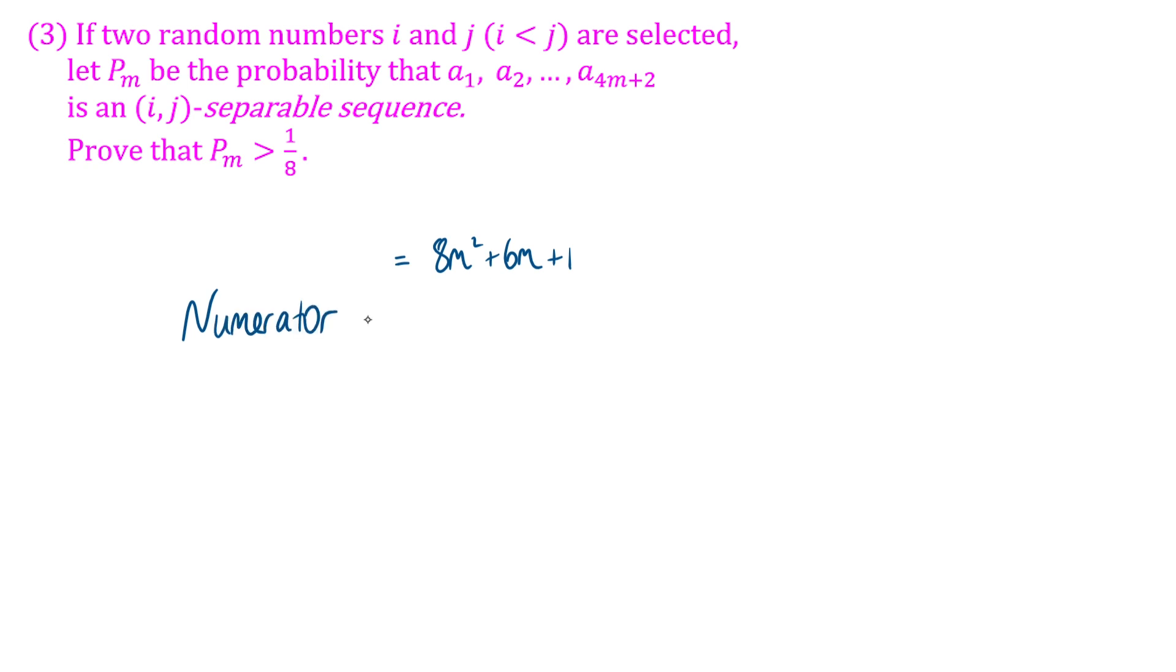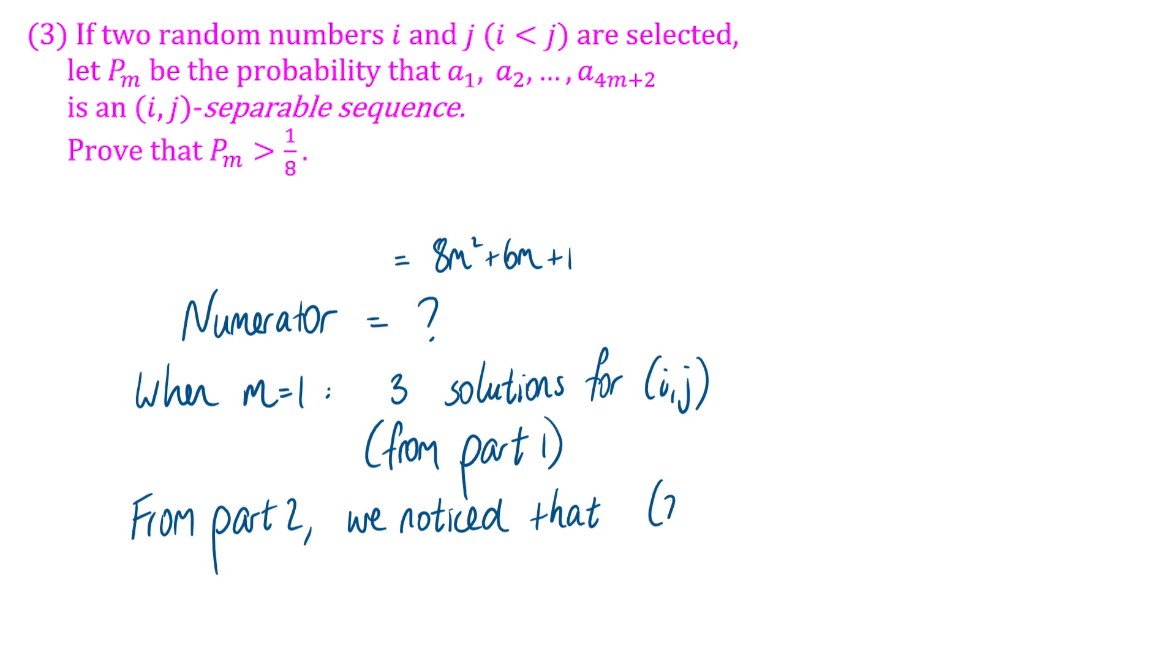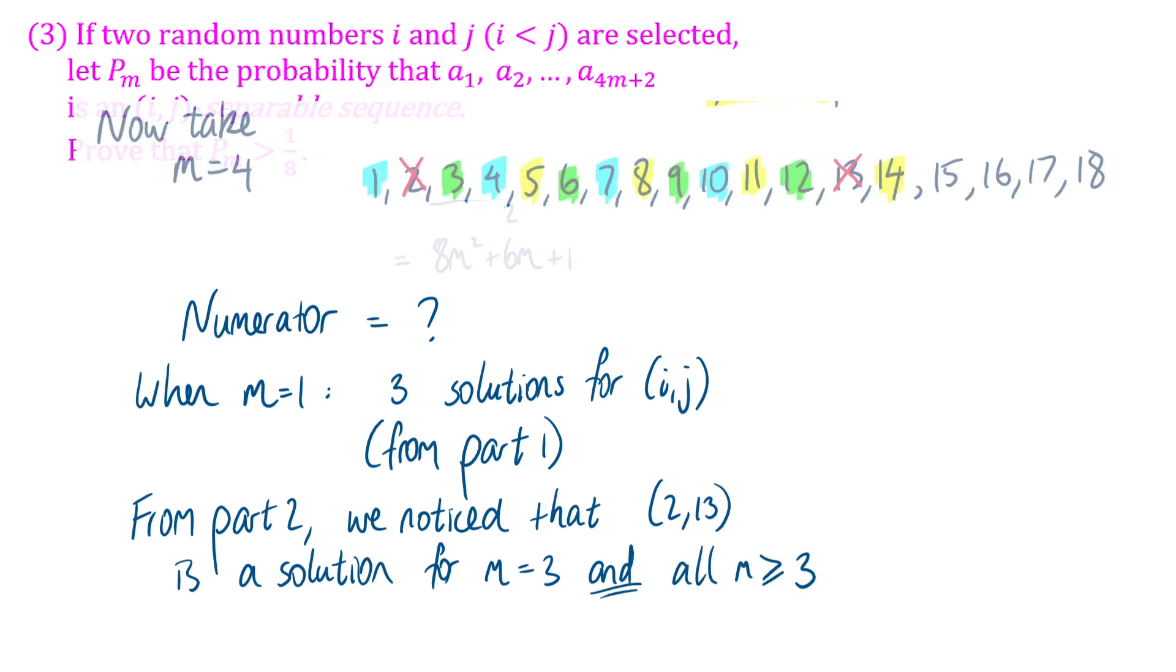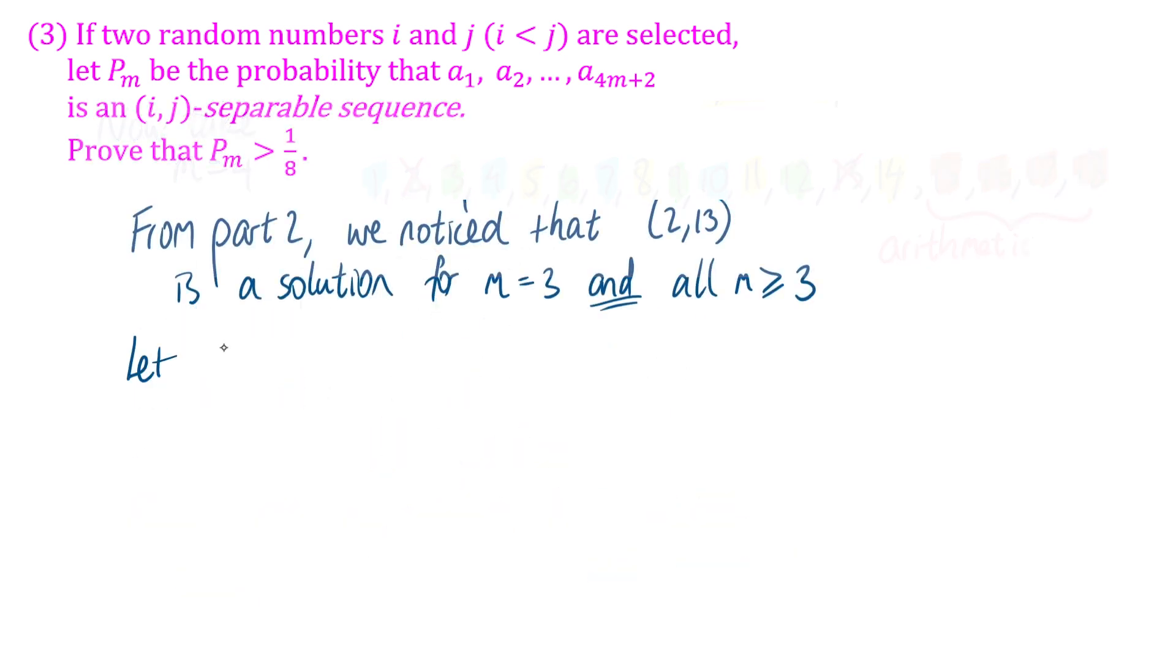The tricky thing is going to be working out the numerator. How many pairs (i,j) do we have for each value of m? To work this out, consider small cases first. In part one, we already did the case when m = 1, that was our six-integer sequence. And we had three choices (i,j) there. What we showed in part two, or part of what we showed in part two, was that once we have a solution, say (2,13) for m = 3, then that same solution (2,13) works for all values of m greater than three.